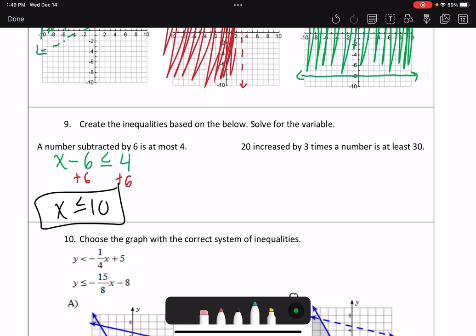My next one says 20 increased by 3 times the number is at least 30. So I have 20 plus 3 times the number is going to give me 3x. At least means it could equal it, but it needs to be greater than or equal to the value of 30. I'm now going to subtract 20 on each side. That's going to give me that 3x is greater than or equal to 10. And I'm going to divide by 3 on both sides. So x is greater than or equal to 10 thirds.